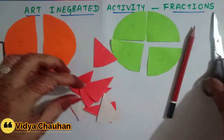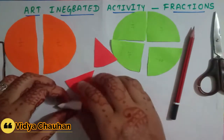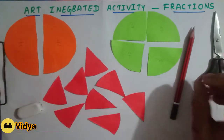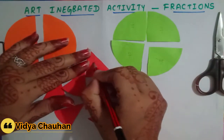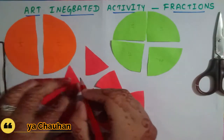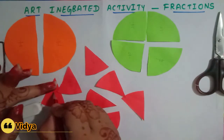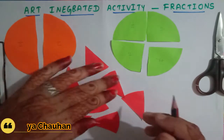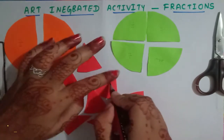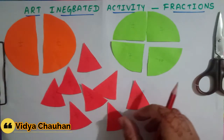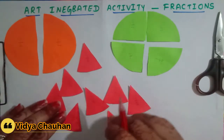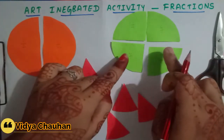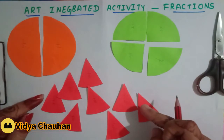I have cut all the parts into eight equal portions. The fraction for each piece is one upon eight, because this whole is divided into eight equal parts. So now we have divided one circular disc into halves, another into one fourth, and the last one into one eighth.